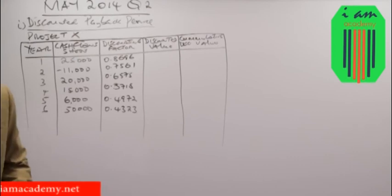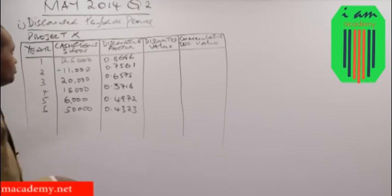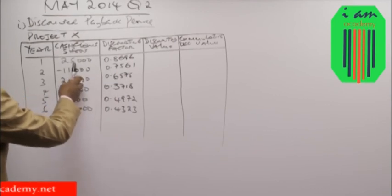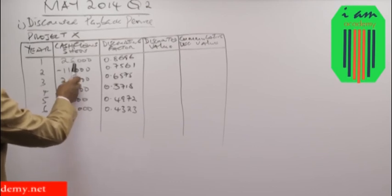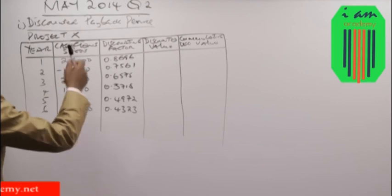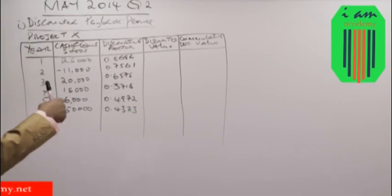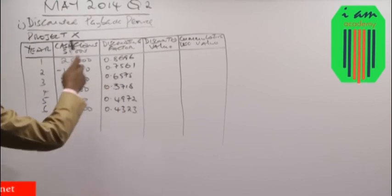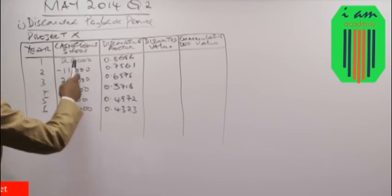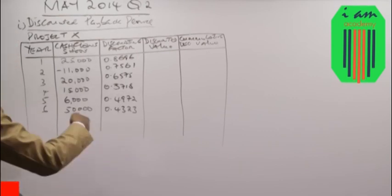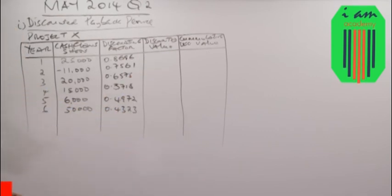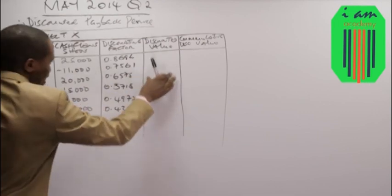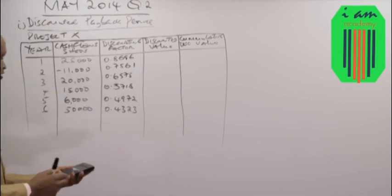Now take the calculator and multiply each discounting factor by its corresponding cash inflow. For Year 1, we multiply 25 million by 0.8696. Remember the question told us cash flows accrue at the end of the year — the reason we are discounting is because this 25 million is in future terms. We bring it into present value terms by discounting, so we can work with discounted figures for the discounted payback period calculation.